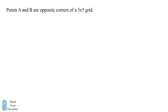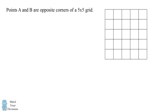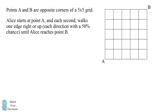Hey, this is Presh Talwalkar. Points A and B are opposite corners of a 5x5 grid. Alice starts at point A and each second walks one edge right or up, each direction with a 50% chance, until Alice reaches point B.